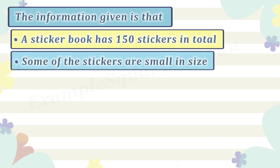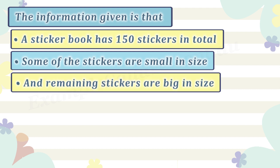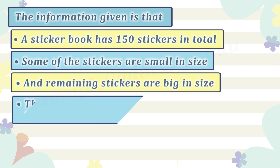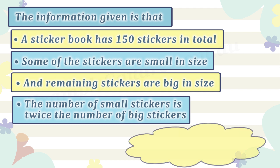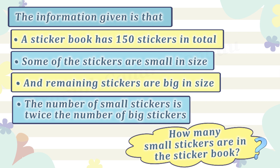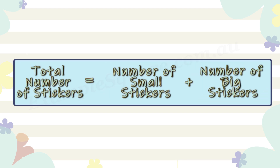The total number of stickers equals the number of small stickers plus the number of big stickers. The number of small stickers is twice the number of big stickers.